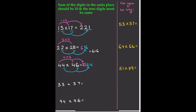Now let's do 33×37. Same method: 3×7 = 21 — write that down. Then multiply 3 by its next highest number, which is 4: 3×4 = 12. So the answer is 1221.